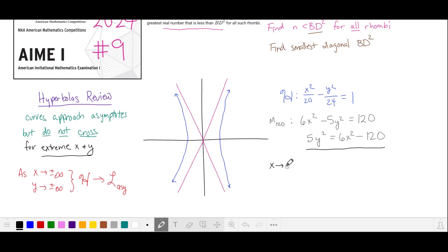notice that as x takes on more extreme values, x squared gets very big, especially in comparison to 120. So what happens is that 5y squared on the left-hand side can be approximated by 6x squared as x takes on very large values.